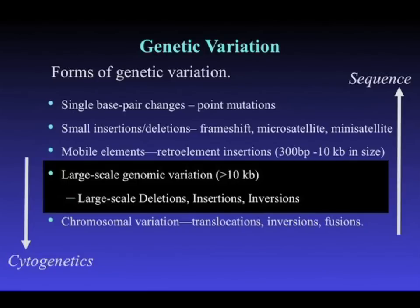Most emphasis in human genetics has been focused on finding single base pair changes and small insertion-deletion events. What I'm going to talk about today is large-scale variation — things that involve 10 KB or more — and most of the events I'll show you that I believe are pathogenic involve hundreds of kilobases of sequence. This type of variation could not be readily visualized cytogenetically without specific probes, but also can't be easily seen by sequencing unless you have complete sequence — it falls in the middle zone of what people have historically looked at.